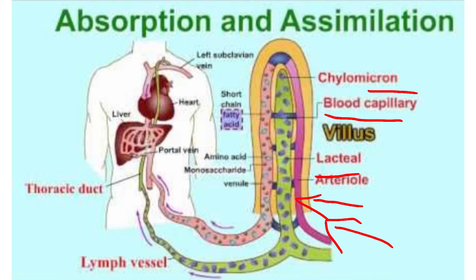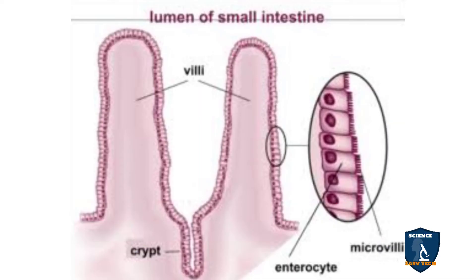In this diagram, we can see the lacteal arteries, lymph vessels and blood vessels. This shows the large intestine and small intestine. This portion is the villi, and the crypt region contains enterocytes.